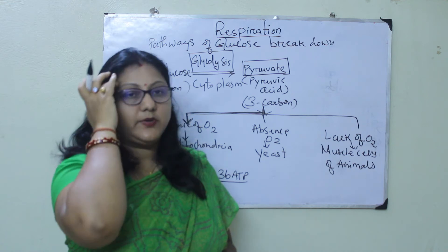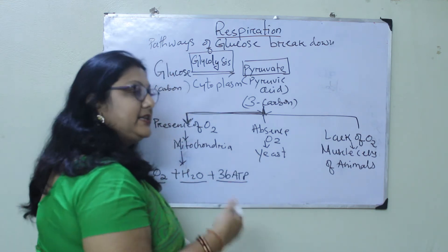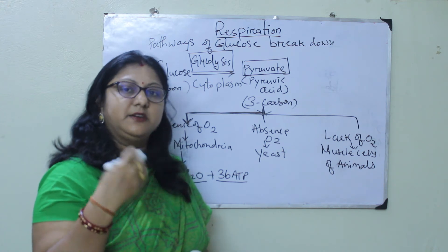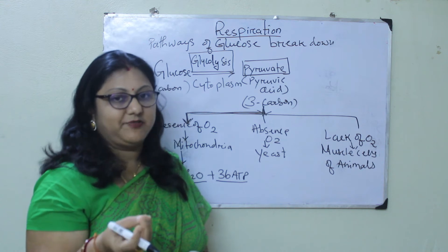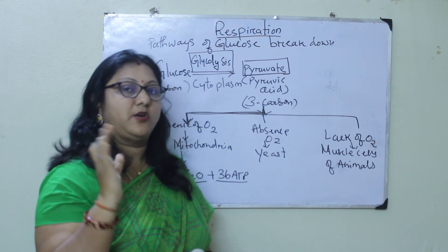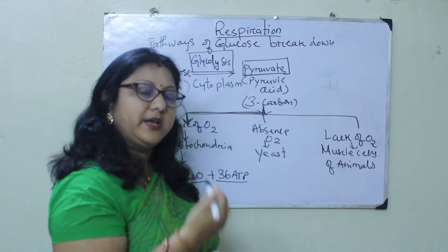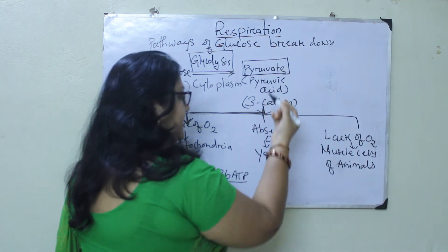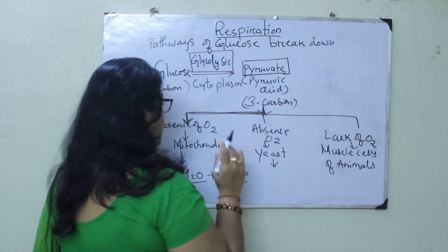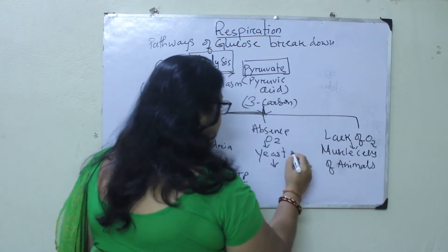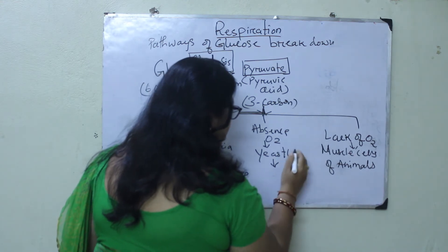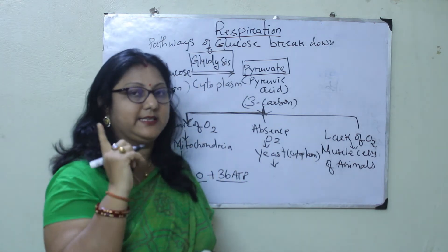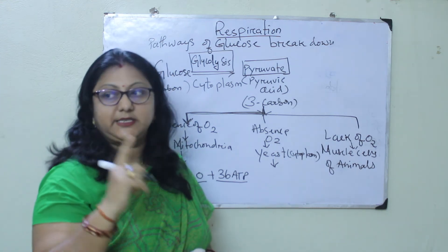If oxygen is not there, it happens in anaerobic organisms — primitive categories like monera or some fungi like yeast. Very few organisms follow this absence-of-oxygen process. In such conditions, pyruvate doesn't go anywhere; it remains in the cytoplasm. So anaerobic respiration takes place in the cytoplasm itself, while aerobic respiration takes place in the mitochondria.